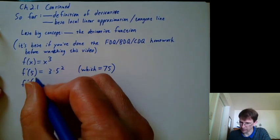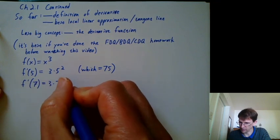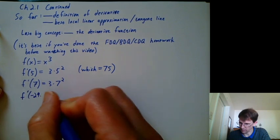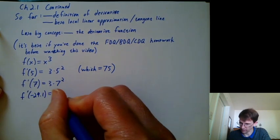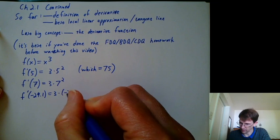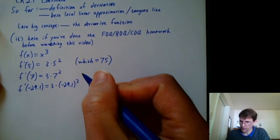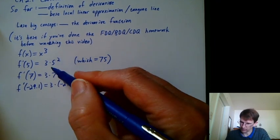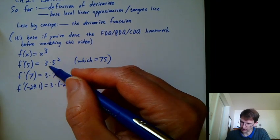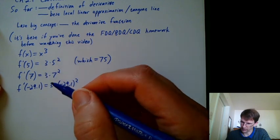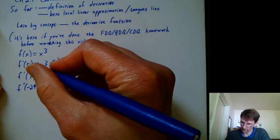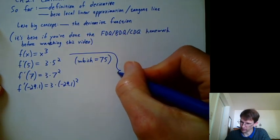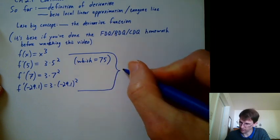But if I had started with a 7, then I would have gotten 3 times 7 squared. If I had started with negative 29.1 squared. So just doing that algebra once, we can kind of trace along with where the 5 is going. And we can figure out ultimately that whatever I plug in here is going to get squared. So these are all individual derivative values.